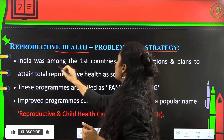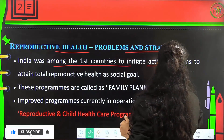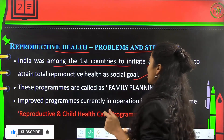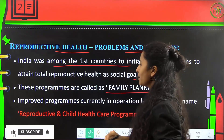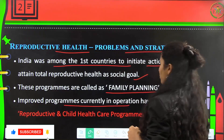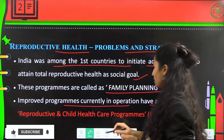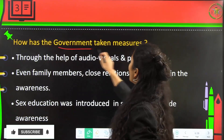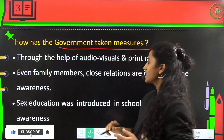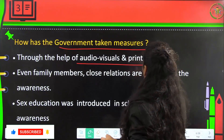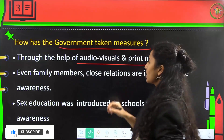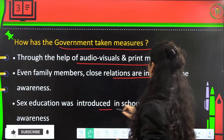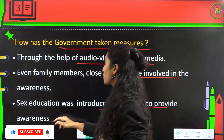India was amongst the first countries to initiate actions and plans to attain total reproductive health as a social goal. These programs are called family planning programs, and currently in operation they have the popular name Reproductive and Child Health Care Programs, or RCH. The government has taken measures through audio visuals, print media, and involving family members to raise awareness. Sex education was also introduced in schools.